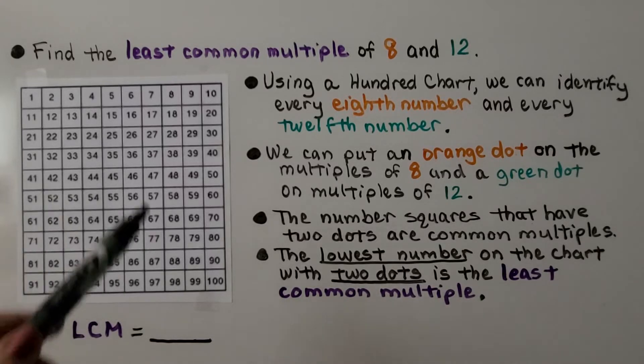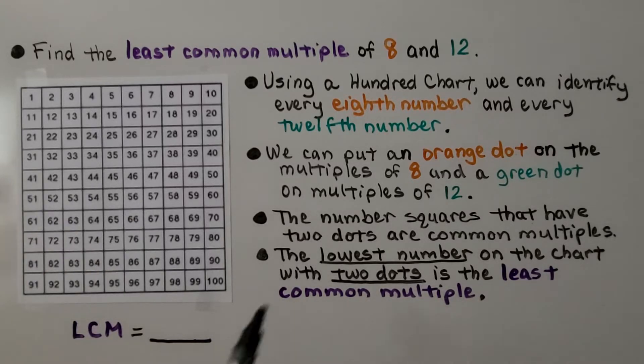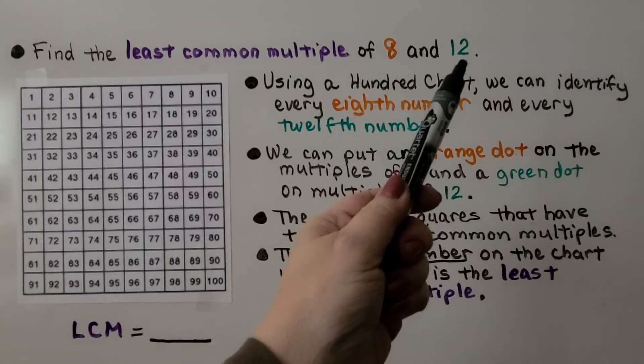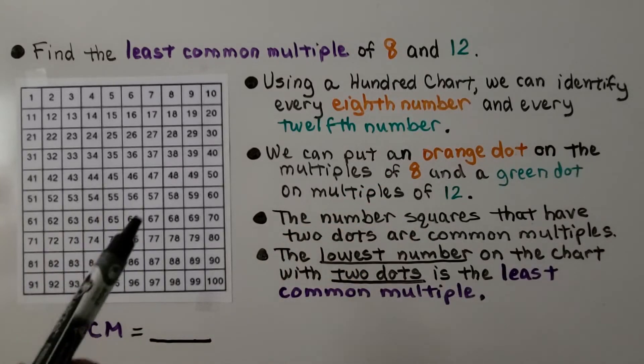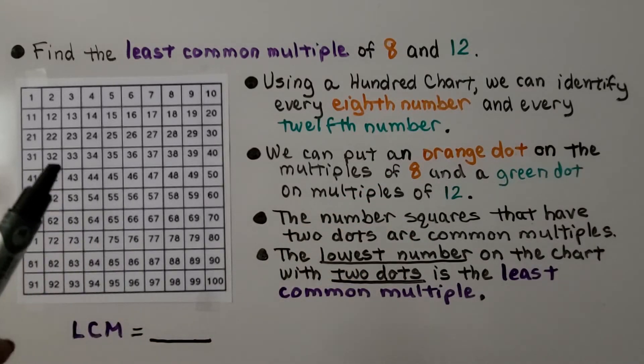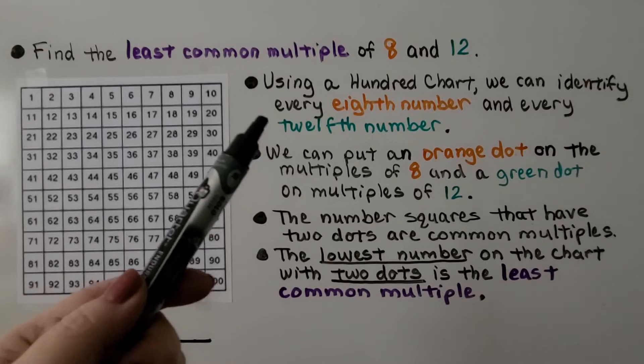Here we have a 100 chart. We need to find the least common multiple of 8 and 12. So we can use a 100 chart and we can identify every 8th number and every 12th number.